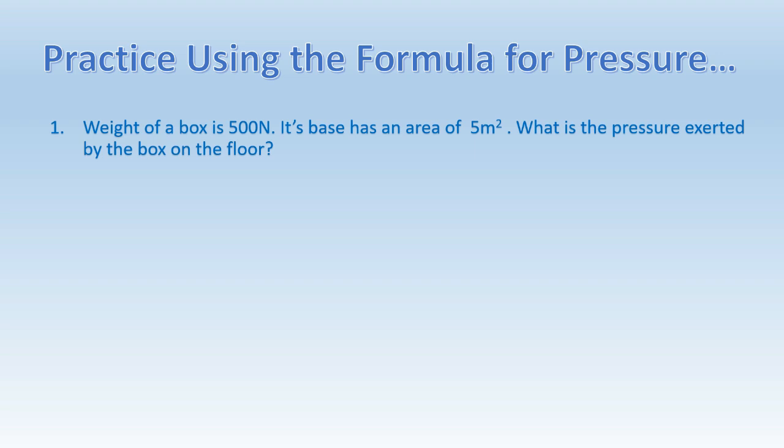Before calculating you should write the formula of pressure and then you have to substitute the values for the equation with units. Writing units with the values is a must. Here the force is 500 Newtons and the surface area is 5 square meters. So you have to divide 500 Newtons by 5 square meters. And you will get the answer as 100 Newtons per square meter.